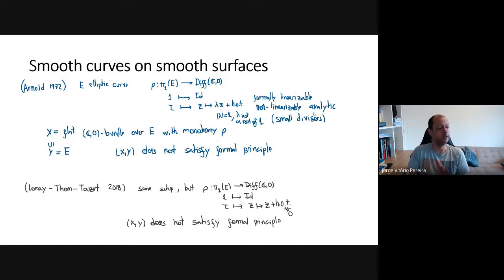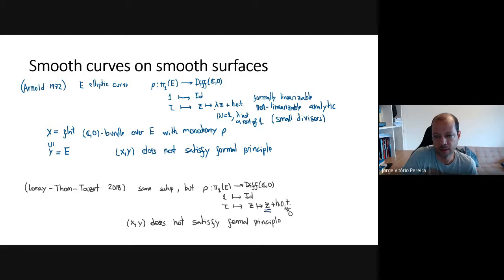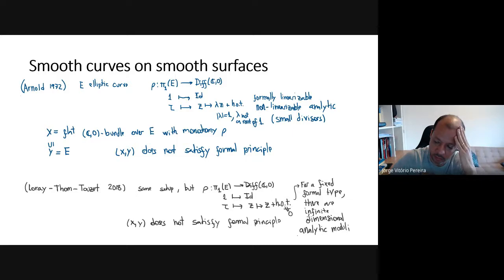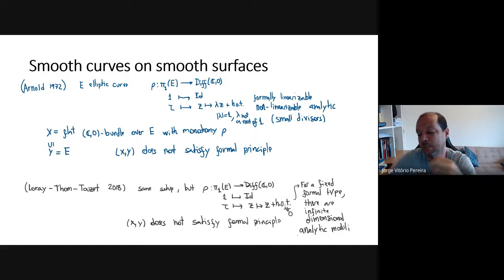More recently, in 2018, Frank Loray, Olivier Thom, and Frédéric Touzet showed that in the same setup — but now considering representations tangent to the identity — the formal principle still does not hold. They give an even more detailed description: for fixed formal type, there are infinite-dimensional analytic moduli. So we have an infinite-dimensional family of formally equivalent neighborhoods of an elliptic curve which are not analytically equivalent.